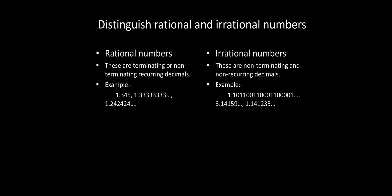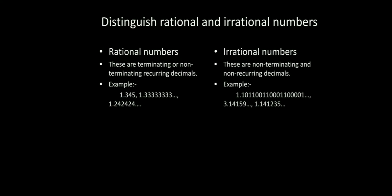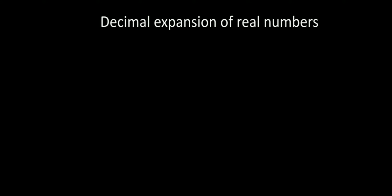Irrational numbers are those which are non-terminating and non-repeating — they do not terminate and do not repeat, like pi which is 3.14159... going on to infinity without repeating, or numbers like 1.1011001... and so on, which do not repeat.